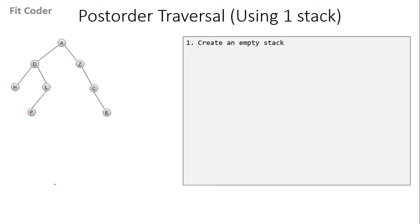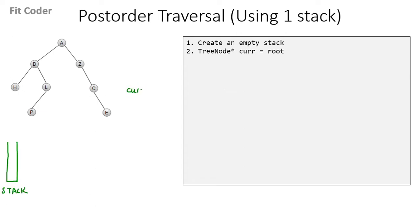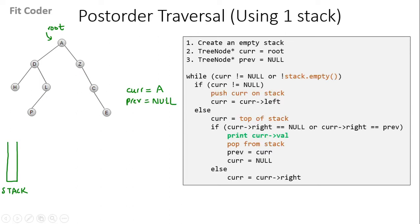The first step is we create an empty stack. Then we keep a variable `current` which we initialize with the root of the tree, which is A. Then we keep a second variable `previous` which we initialize with null. Then we have this while loop which we run till `current` is not equal to null or stack is not empty.